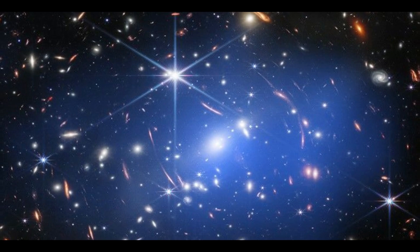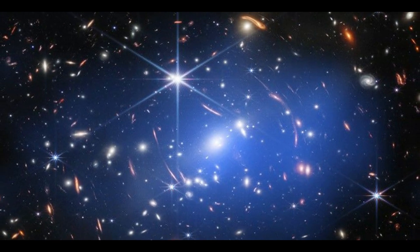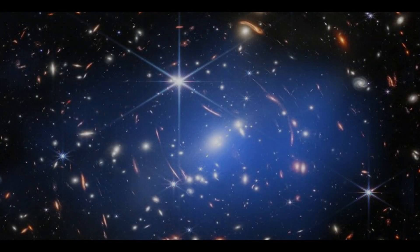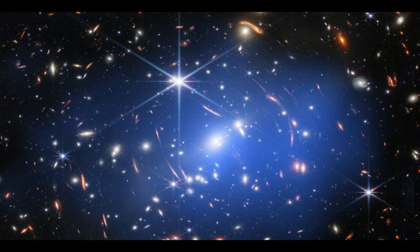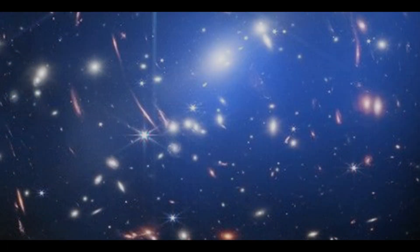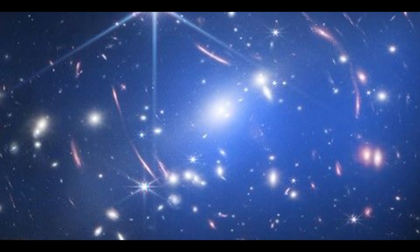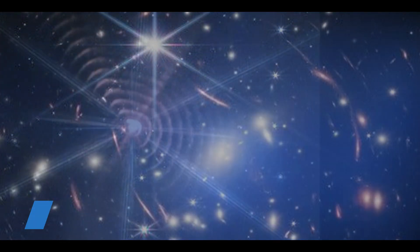In the Cartwheel Galaxy, Chandra data reveal X-rays released by superheated plasma and individual destroyed stars, as well as neutron stars and black holes greedily feeding on material ripped from companion stars.